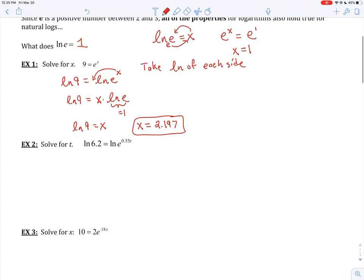In practice problem number two, the natural log is already in both sides. So in this one, all we have to do is just use our property where we bring the 0.55 down in front. We've got natural log of 6.2 equals 0.55T times the natural log of E. The natural log of E equals 1. So I'm going to kind of cross that out because it equals 1. And now to get T all by itself, we're just dividing both sides by 0.55. This is all just calculator work at this point. And hopefully everyone is getting 3.317 as our solution for that.